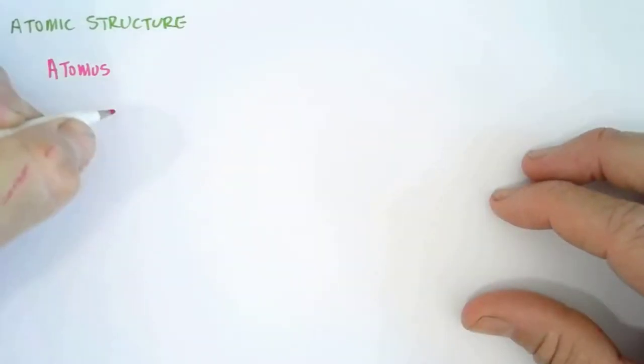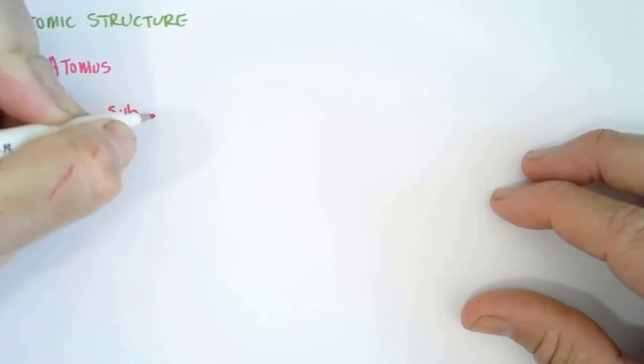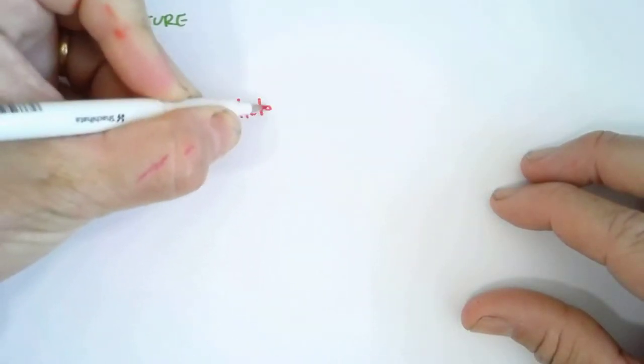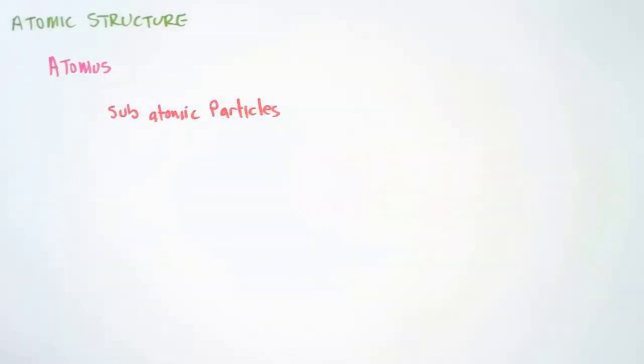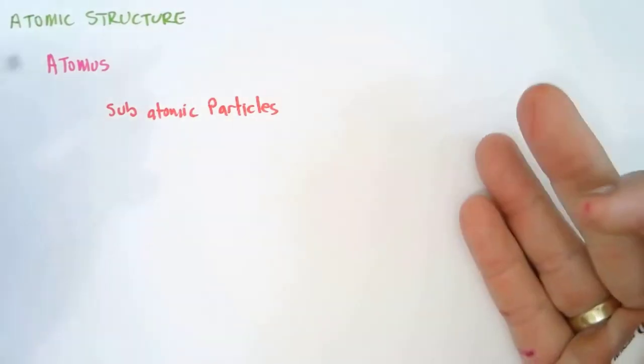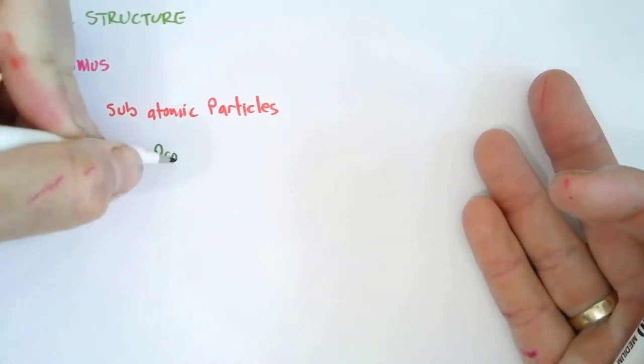Now we know that we can actually have particles that are smaller than an atom, and they are subatomic particles. We've got three subatomic particles that we're interested in. First of all, we have the proton.